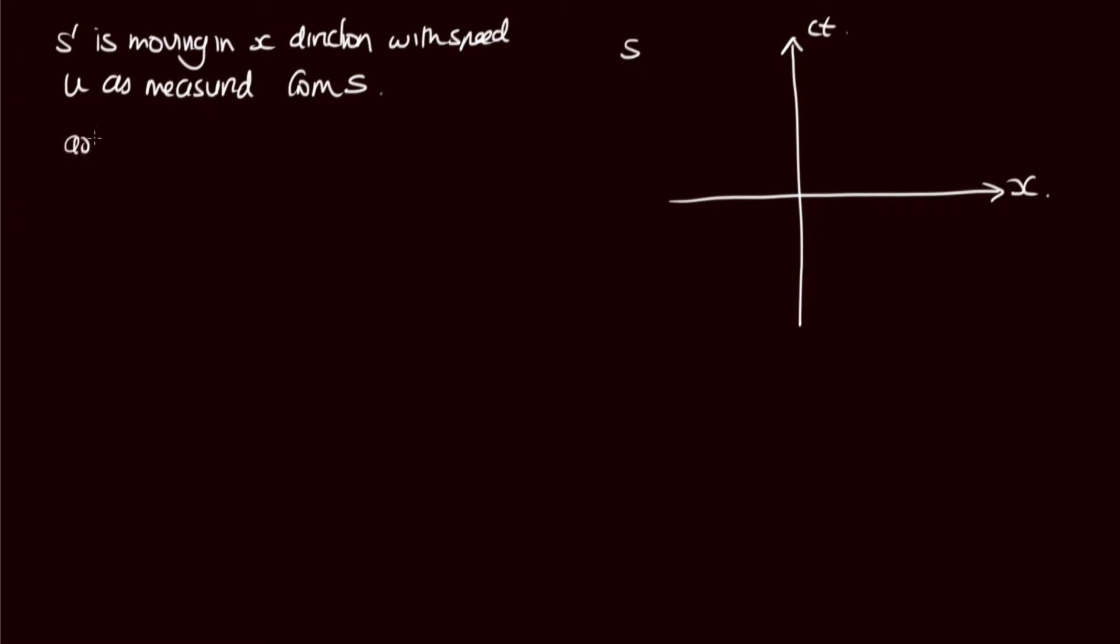Here's our axis in the S frame, and S' is moving in the x direction with speed u as measured from S. What we want to do is work out how do we draw the axes for S' on this diagram. So first of all, let's just be really clear what the axes are. This axis here, the x axis, has the equation ct equals zero. This axis here, the ct axis, has the equation x equals zero. So the S' axes will be ct' equals zero, that will be the x' axis, and x' equals zero, that will be the ct' axis.